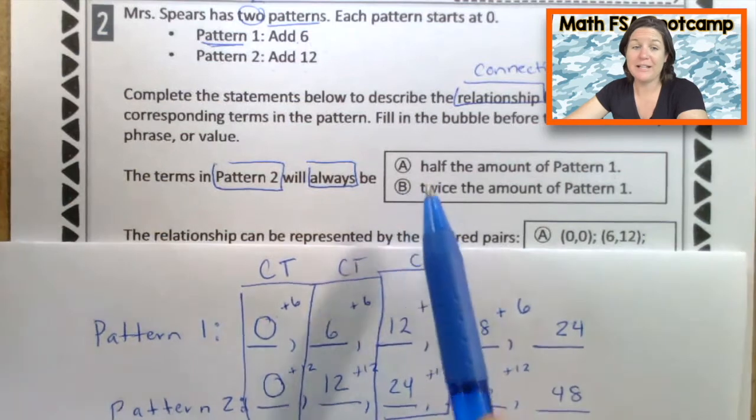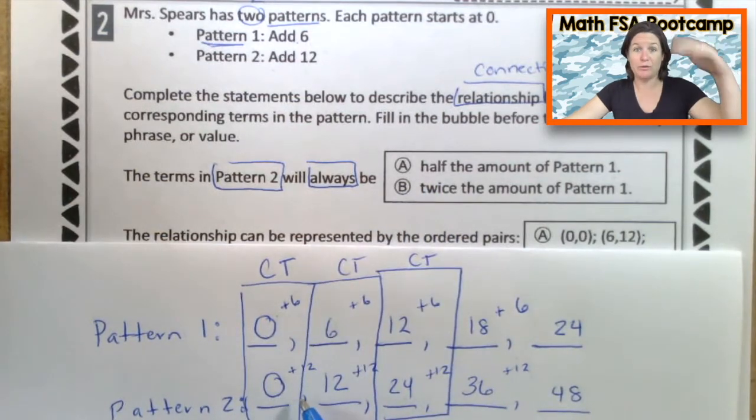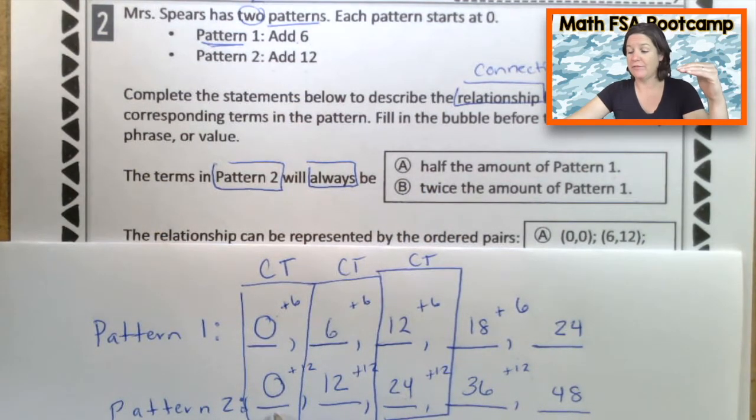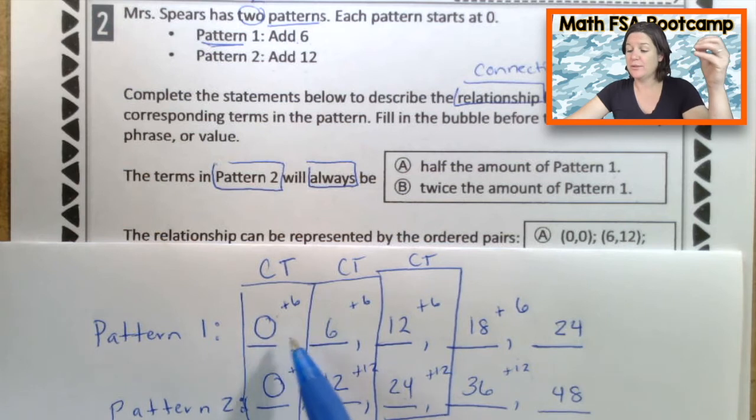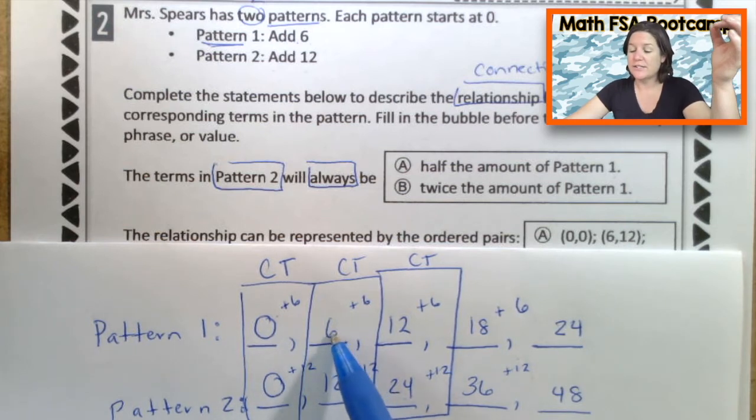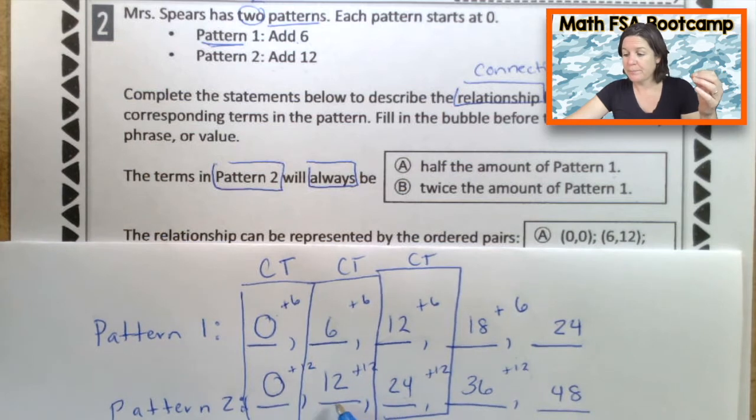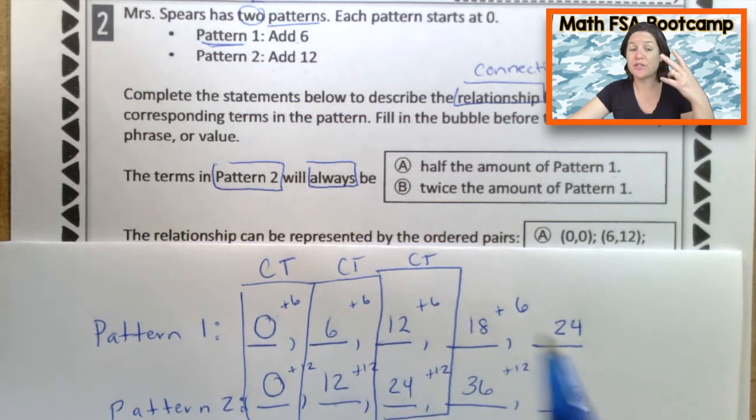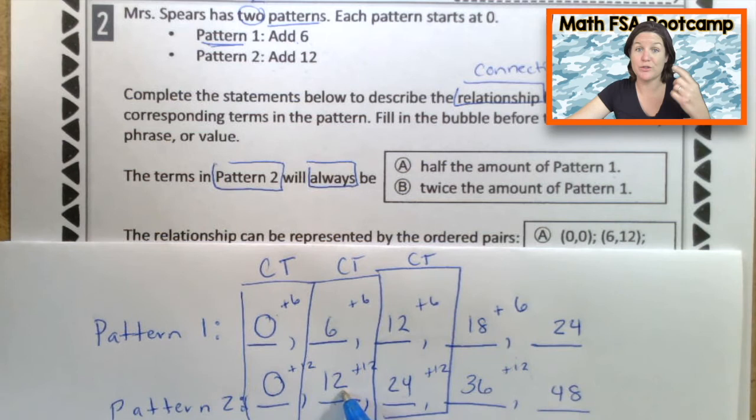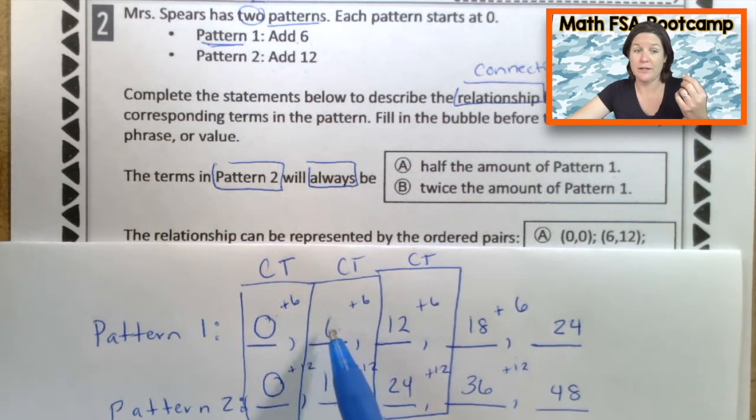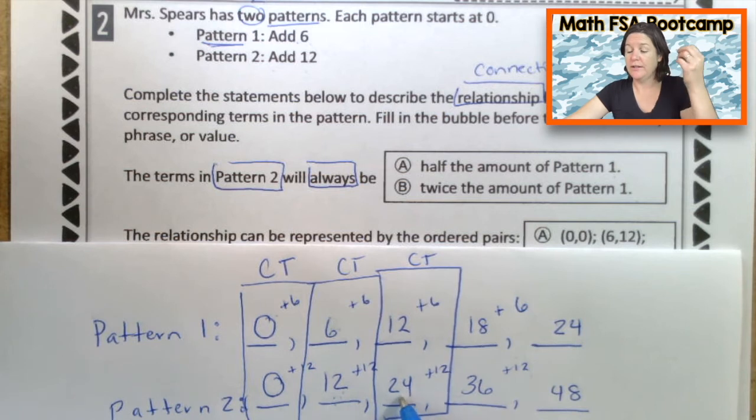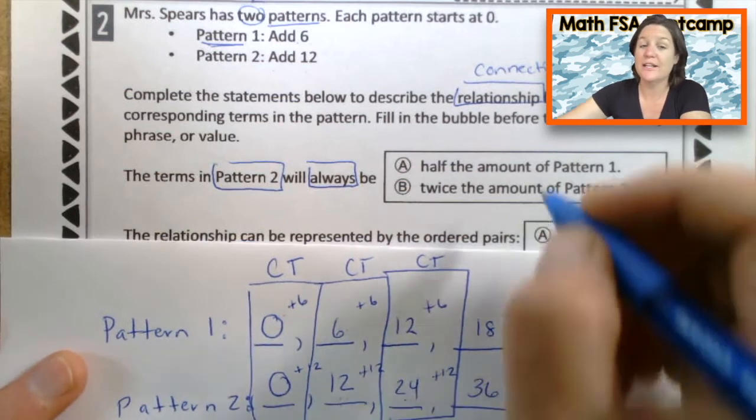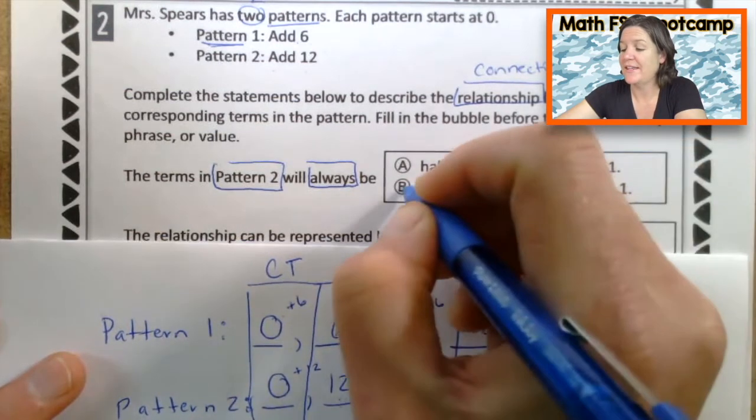The terms in pattern two. Here's the terms in pattern two. Are they half the amount of pattern one or is pattern two twice the amount of pattern one? Well, half would mean that pattern two goes down, right? It decreases. It's cut in half, but I'm looking and I'm seeing here was, well, zero and zero. That's kind of hard to tell, but here we have 6 and 12. It looks like pattern two is two times the amount, twice the amount of this one, because six times two would be 12. Here 24 is 12 times two. So this pattern two is actually twice the amount.